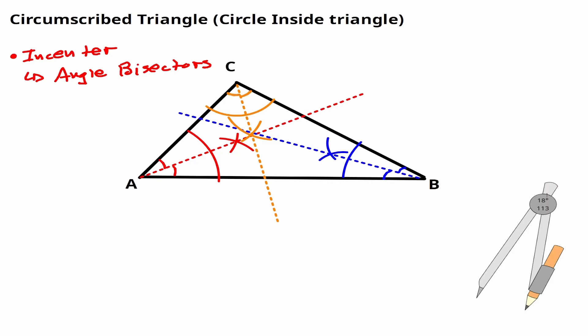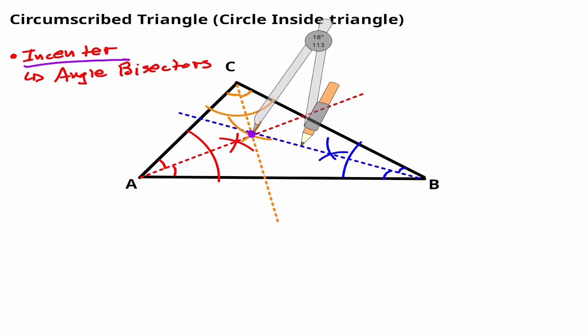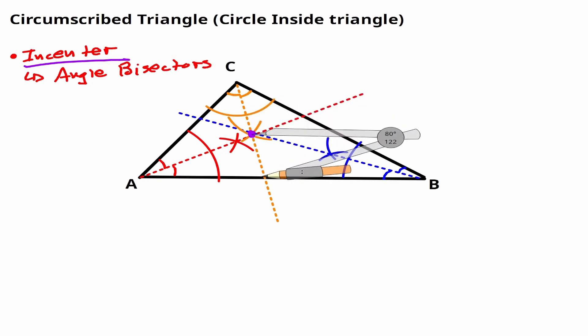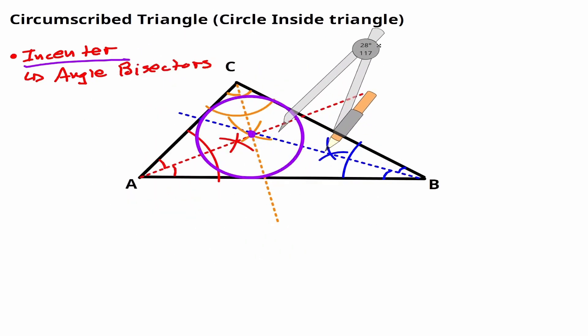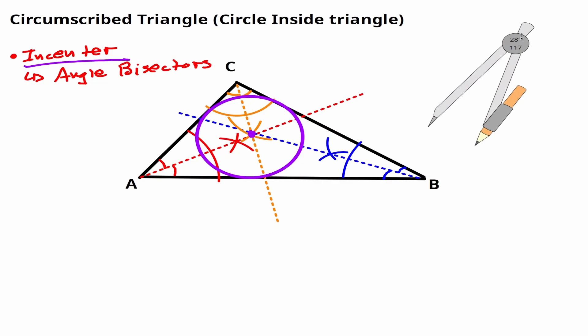One thing to notice is that all these angle bisectors intersect at a point, and that point is right here. This is the point we're going to define as the incenter. I'm going to get my compass and assume this is the center of the circle I want to create. I'll measure the distance from that center to one of the sides of the triangle, and assume that is the radius. Now I know the center and the radius — let me rotate my compass, and notice we are creating a circle contained within the triangle. Therefore, we have constructed a circumscribed triangle.